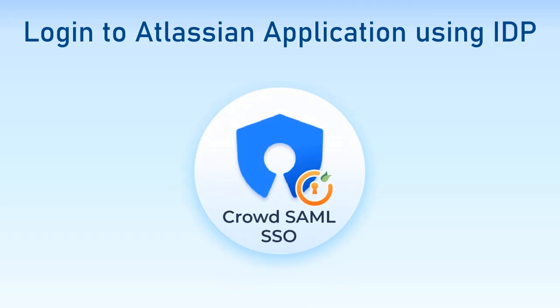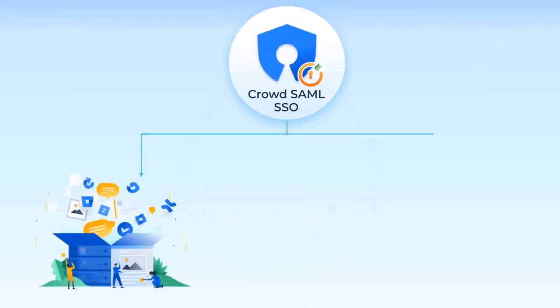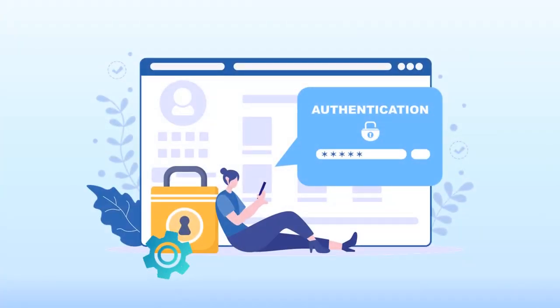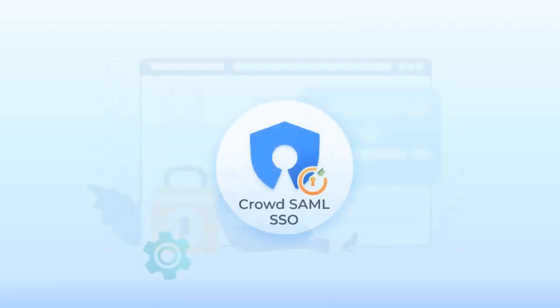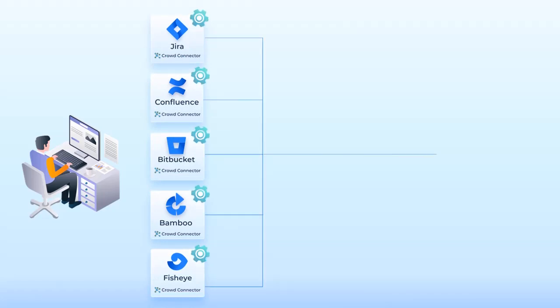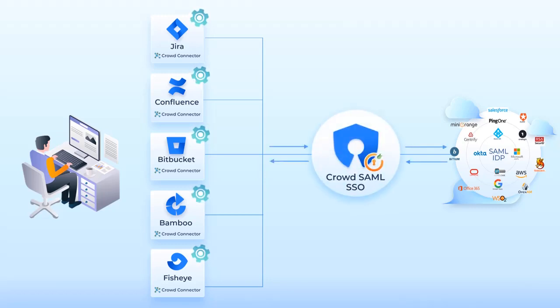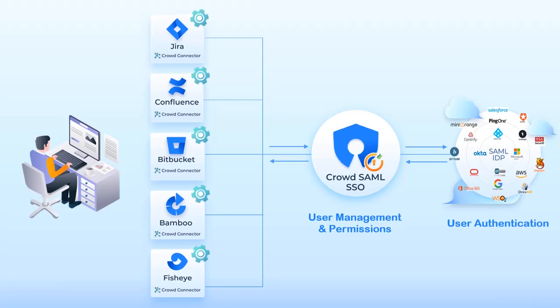Using our unique Crowd and Connector solution, you can connect all your applications to your identity provider for user authentication and still manage all the user permissions and access via Crowd. Whenever a user tries to access any application, such as Jira, he will be redirected to the IDP for authentication, after which he will be able to access the application. All requests and responses will go through Crowd. IDP will handle user authentication, while Crowd will handle user management and permissions for all associated applications.